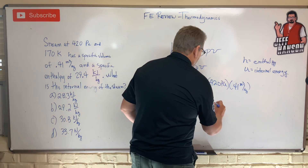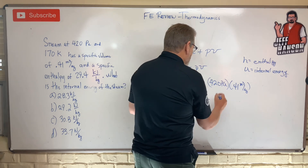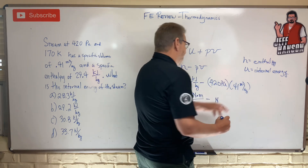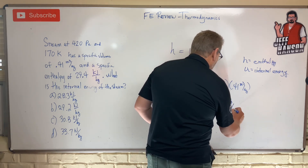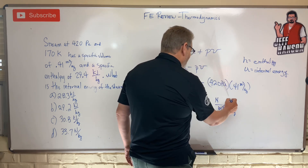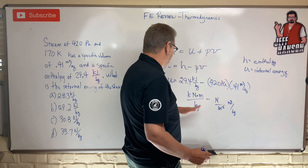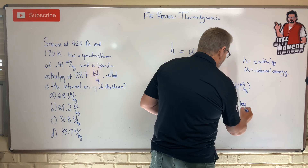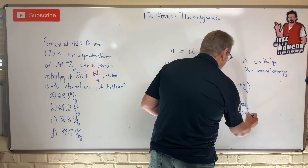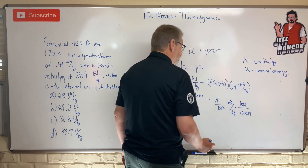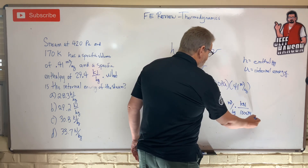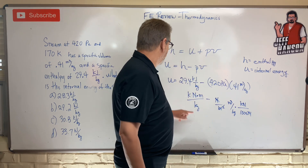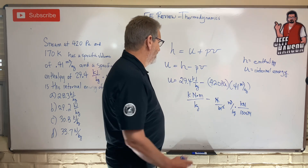We need apples and apples to add these together. A pascal is a newton per meter squared, and we have meters cubed per kilogram, so those partially cancel to give newton meters per kilogram. But our enthalpy is in kilonewton meters per kilogram. Since 1 kilonewton equals 1000 newtons, we divide the pv term by 1000 to match units — giving kilonewton meters per kilogram.